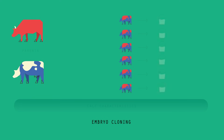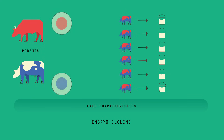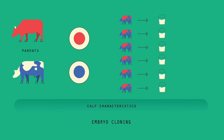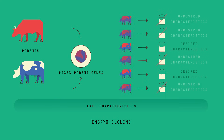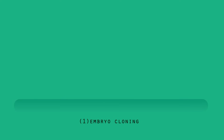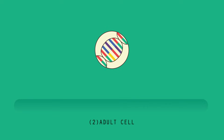Hopefully, the calves will have the characteristics that the farmer desires, but as sexual reproduction is involved and the genes from both parents are randomly mixed, there is always the chance that they won't. There is a way to get around that problem, and that is to use another technique called adult cell cloning.